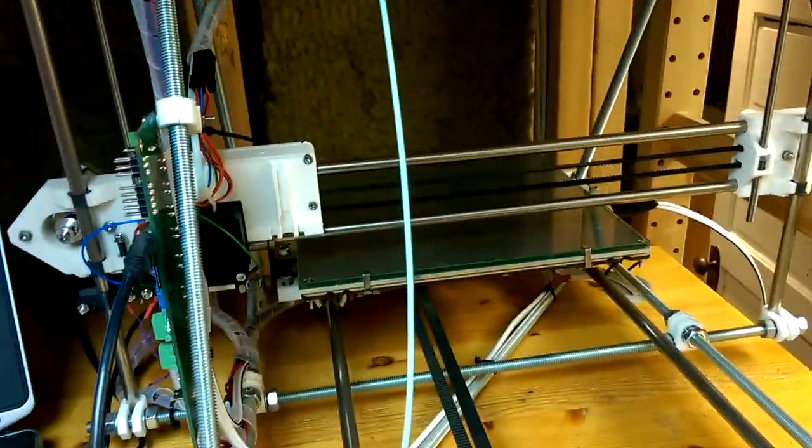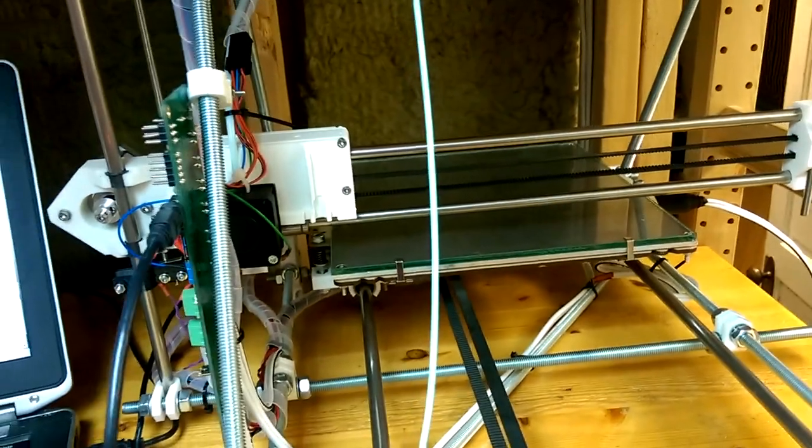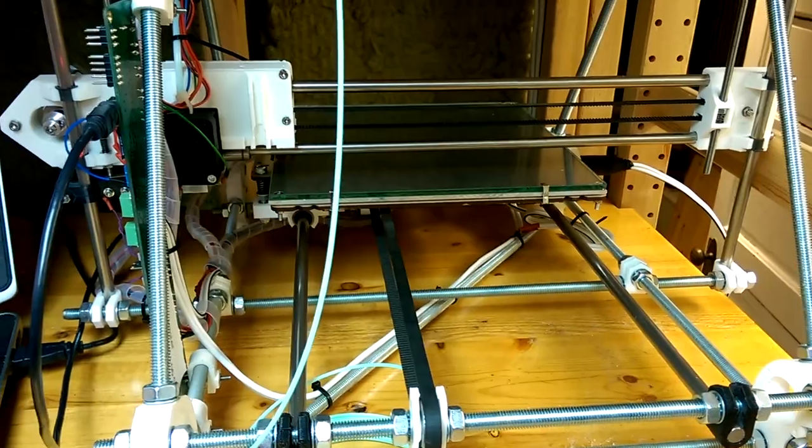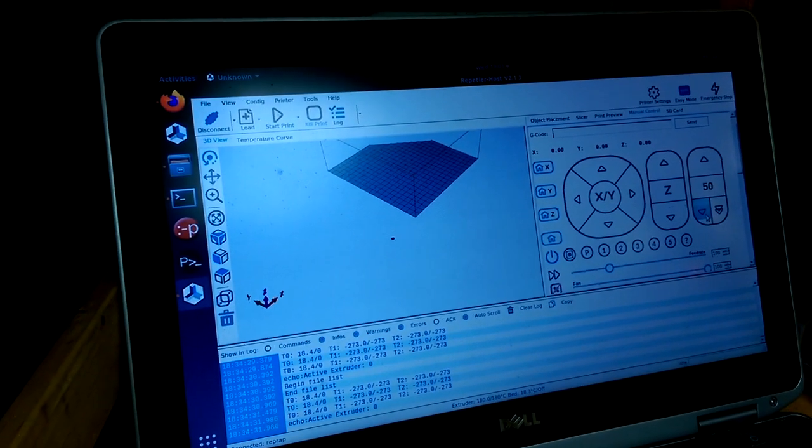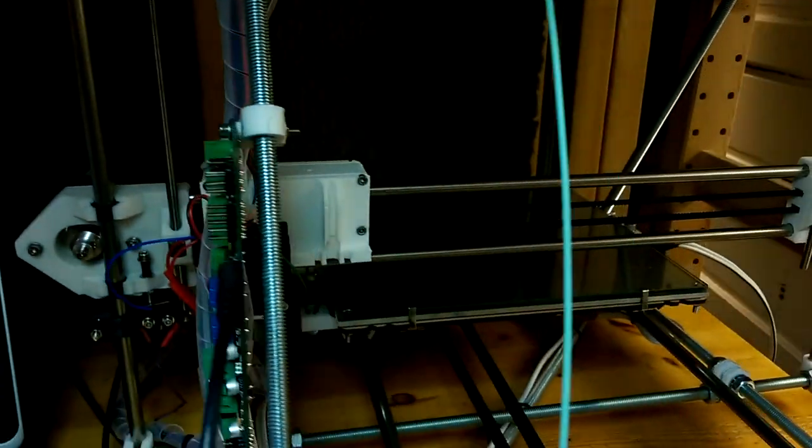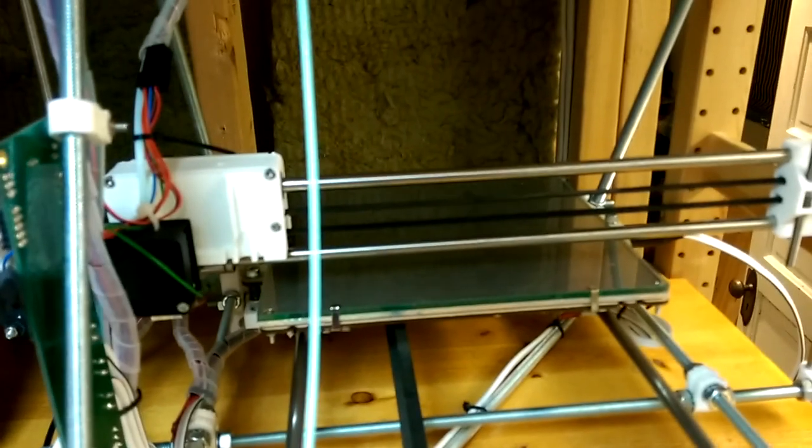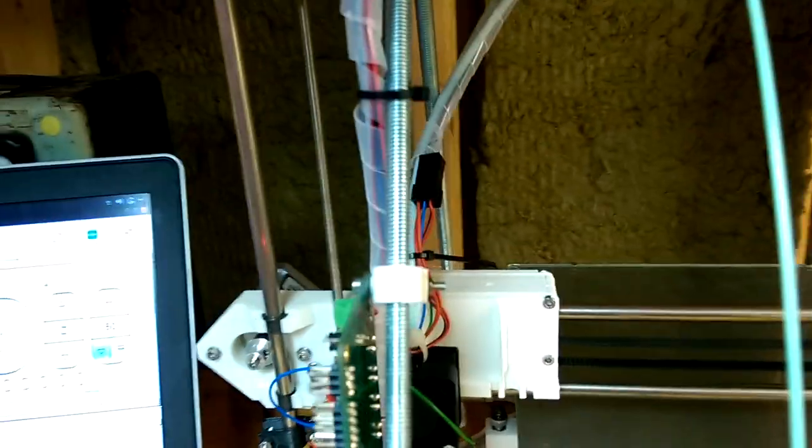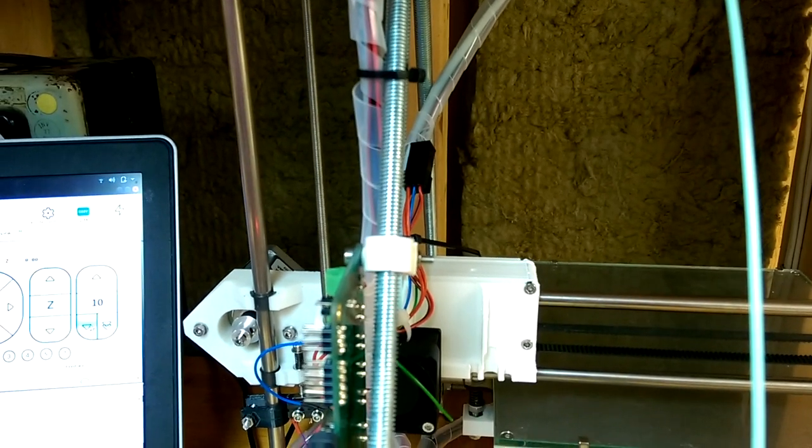Okay, so I couldn't get it working with Pronterface for some reason. I couldn't get the bed to heat up or something like that. So it's either a problem with Pronterface or it was a problem with communications with the board. But using Repetier, I am able to control the printer and I've set up the geometry for a 200-280 build volume.